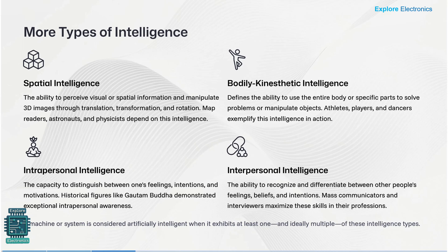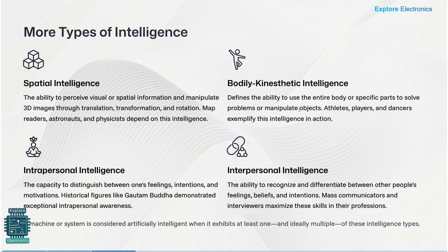Then bodily-kinesthetic intelligence. It comes through body language, body parts, or entire body movement. Here we have the ability to use our entire body or specific parts to solve problems or manipulate objects. Athletes, players, and dancers extensively use this intelligence in their actions — that is bodily-kinesthetic intelligence.